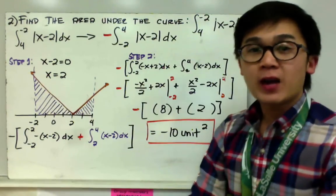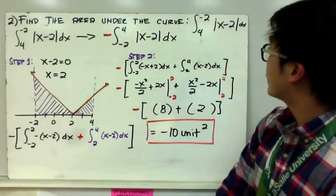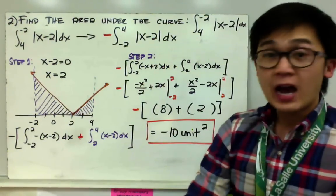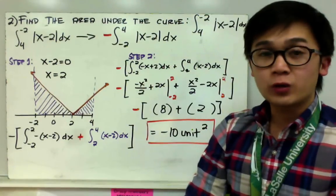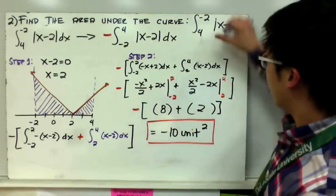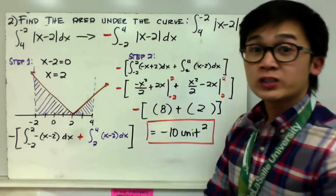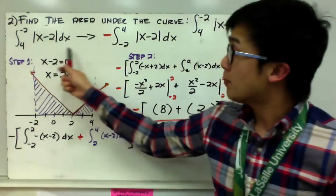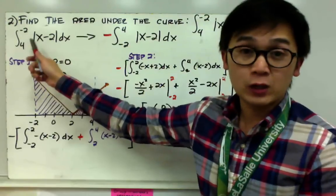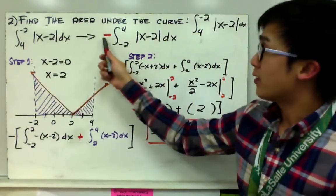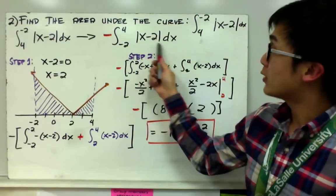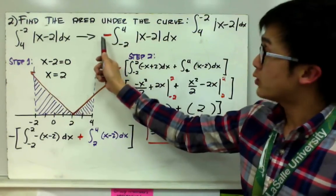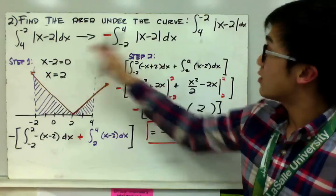For our second example, let's find the area under the curve for the absolute value of (x minus 2) dx from 4 to negative 2. Notice that the lower limit is actually higher than the upper limit. One property of the definite integral is that you can switch your lower and upper limits, provided you change the sign of your function from positive to negative. So I change the notation to the negative integral of |x minus 2| dx from negative 2 to 4.